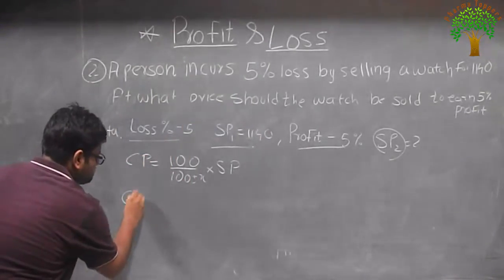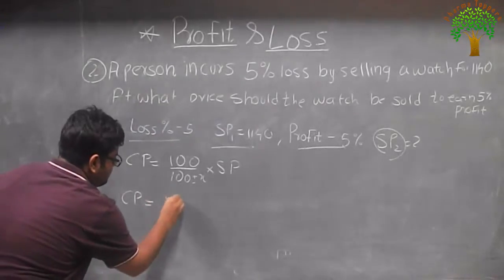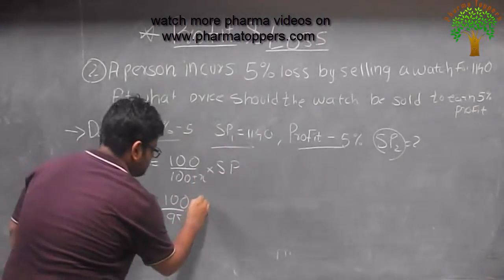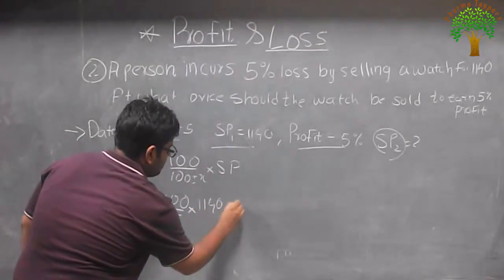In the first case the cost price being same. It's 100 upon 100 minus 5 that is 95 into the first selling price that is 1140. It's equation 1.